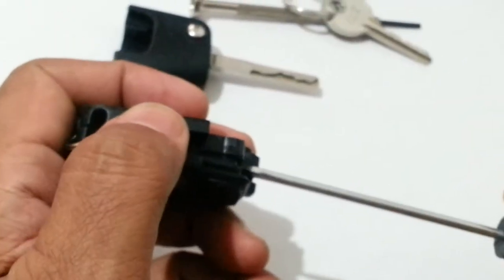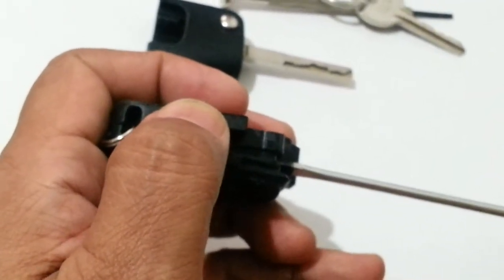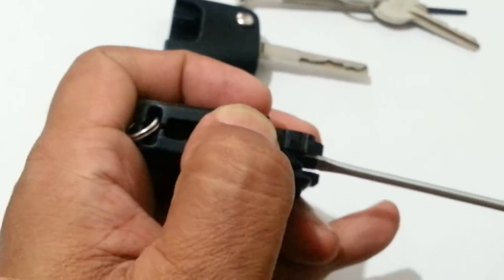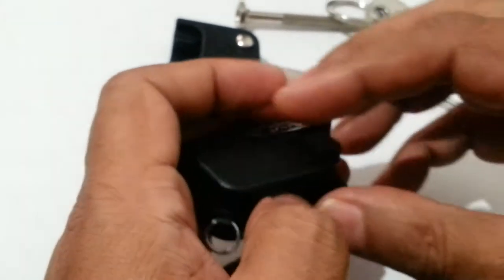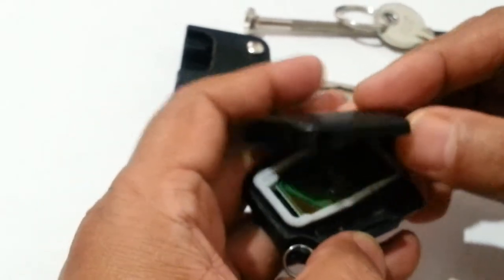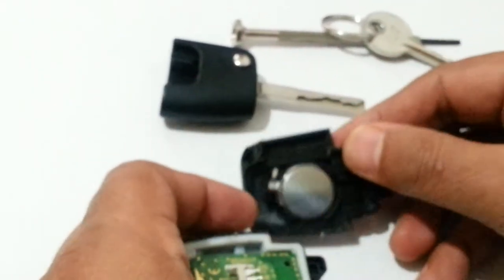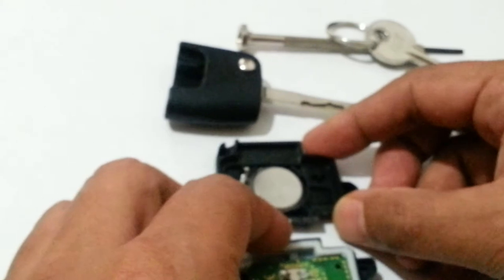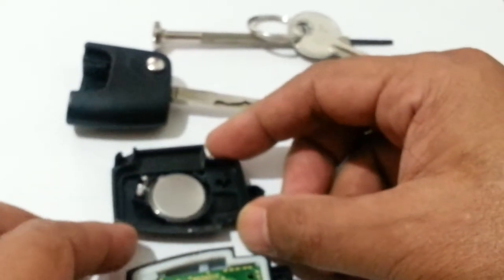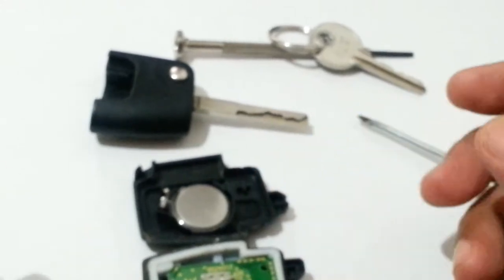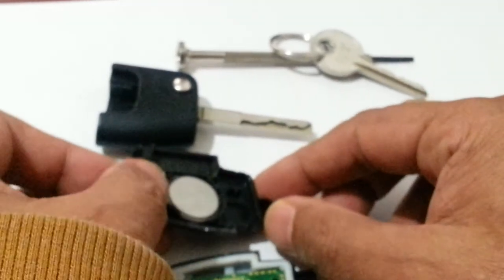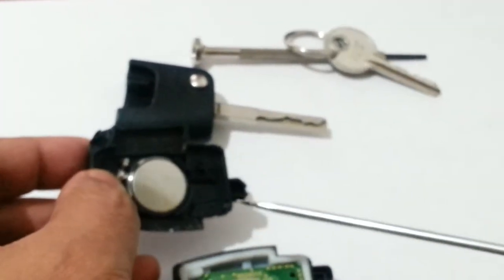Once you do that, you just put a little pressure on like this along, and your key, there we are, it comes off. Becomes two-parted. So once you do that, what you need to do is just get your screwdriver.